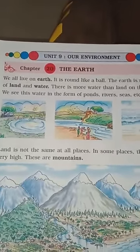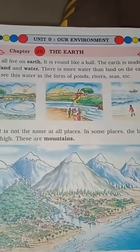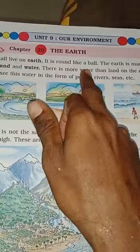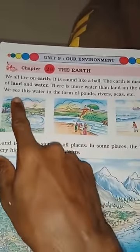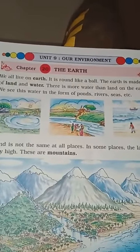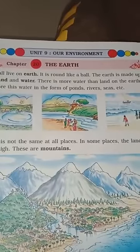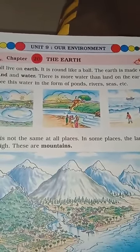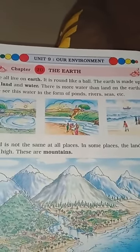You know what is Earth? We all live on Earth, isn't it children? It is round like a ball. The Earth is made up of land and water. There is more water than land on the Earth. About 60% of the Earth is covered by water, and the remaining 40% is land. So there is more water than land on the Earth.